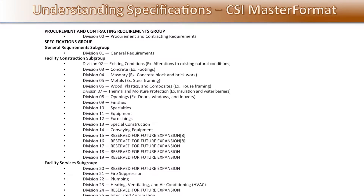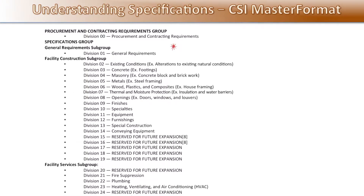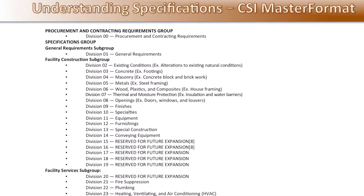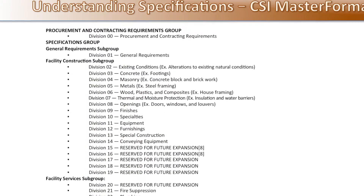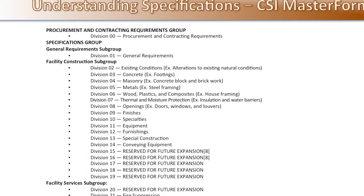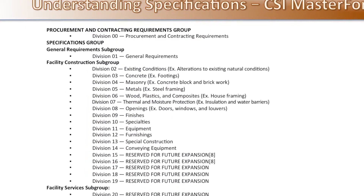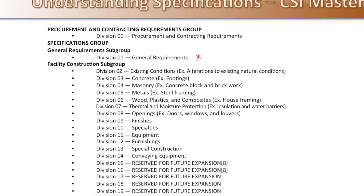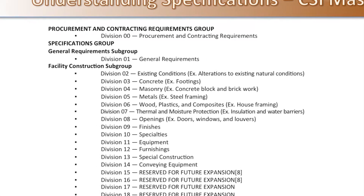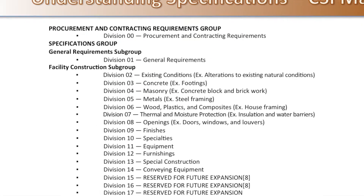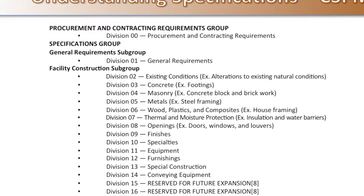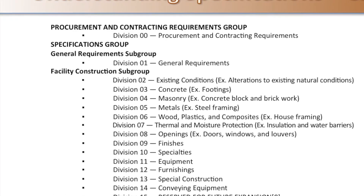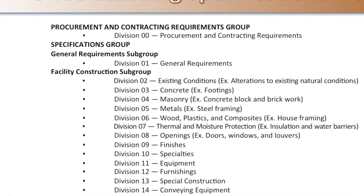Division 00, Procurement and Contracting Requirements, is the first and most logical division. Next is Division 1, General Requirements. This division is typically glossed over until there's a problem. Always read these two divisions.